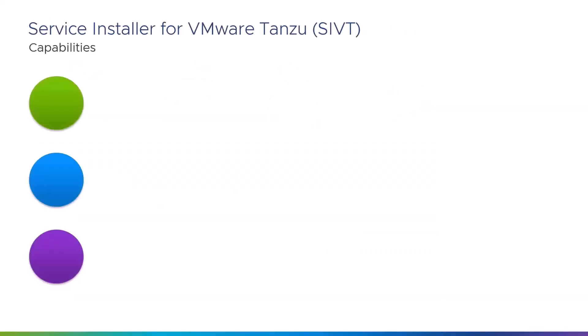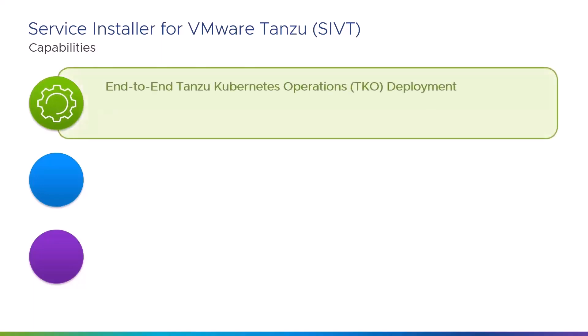It uses best practices for deploying and configuring the required TKO components such as NSX Advanced Load Balancer, Tanzu Kubernetes Grid Management Cluster, Tanzu Kubernetes Grid Shared Services Cluster, and Tanzu Kubernetes Grid Workload Clusters. TKO deployment also includes creation and configuration of the networking substrate.